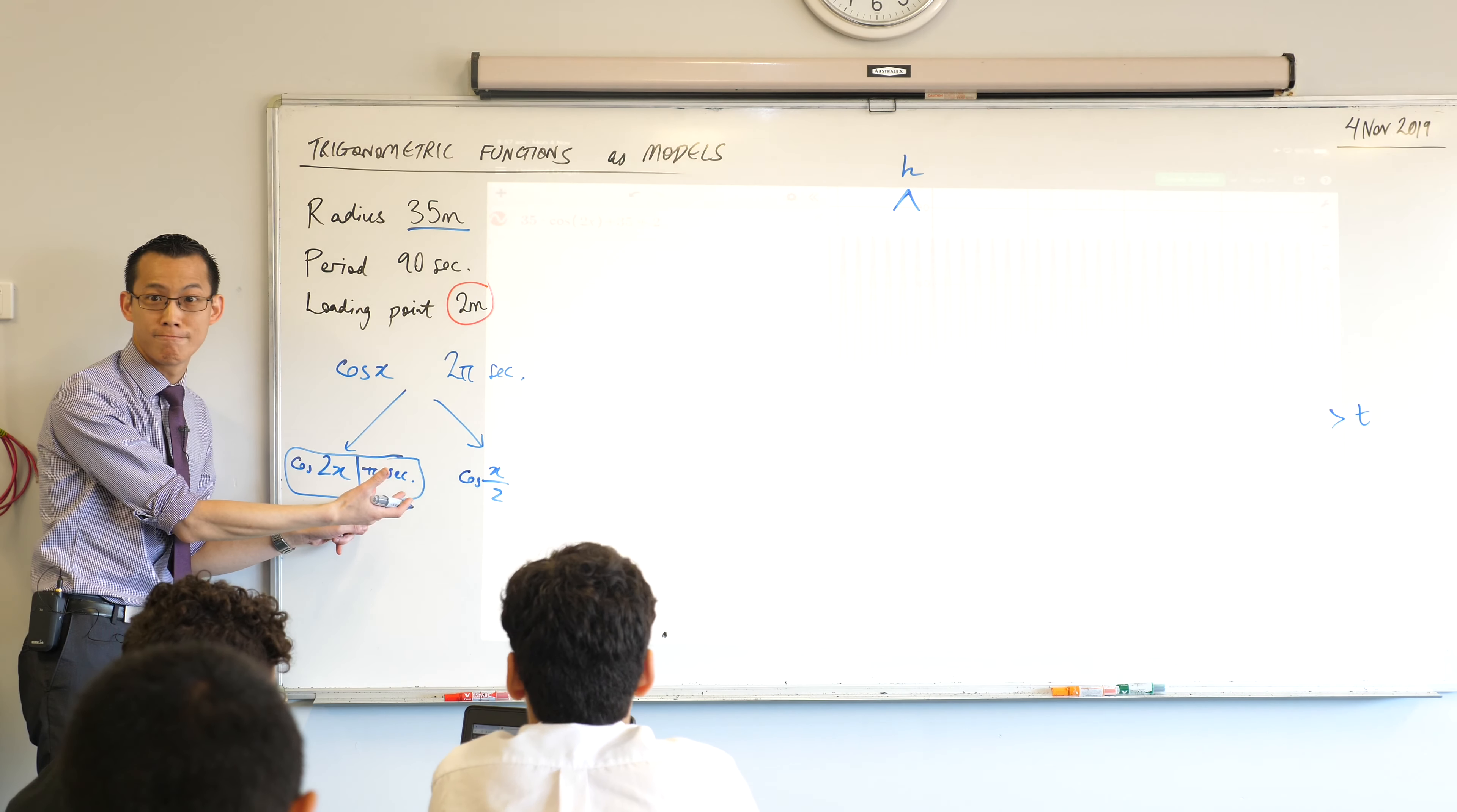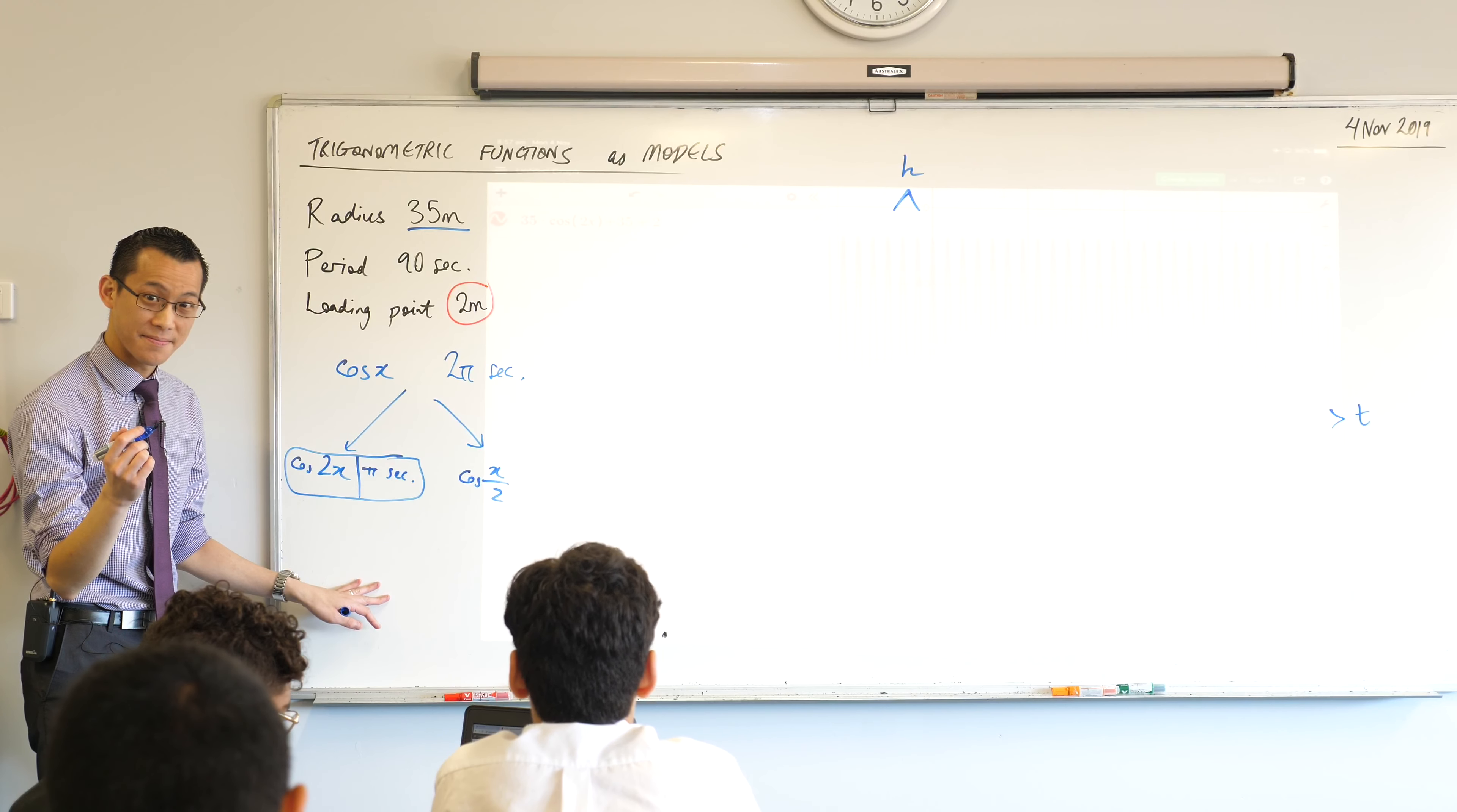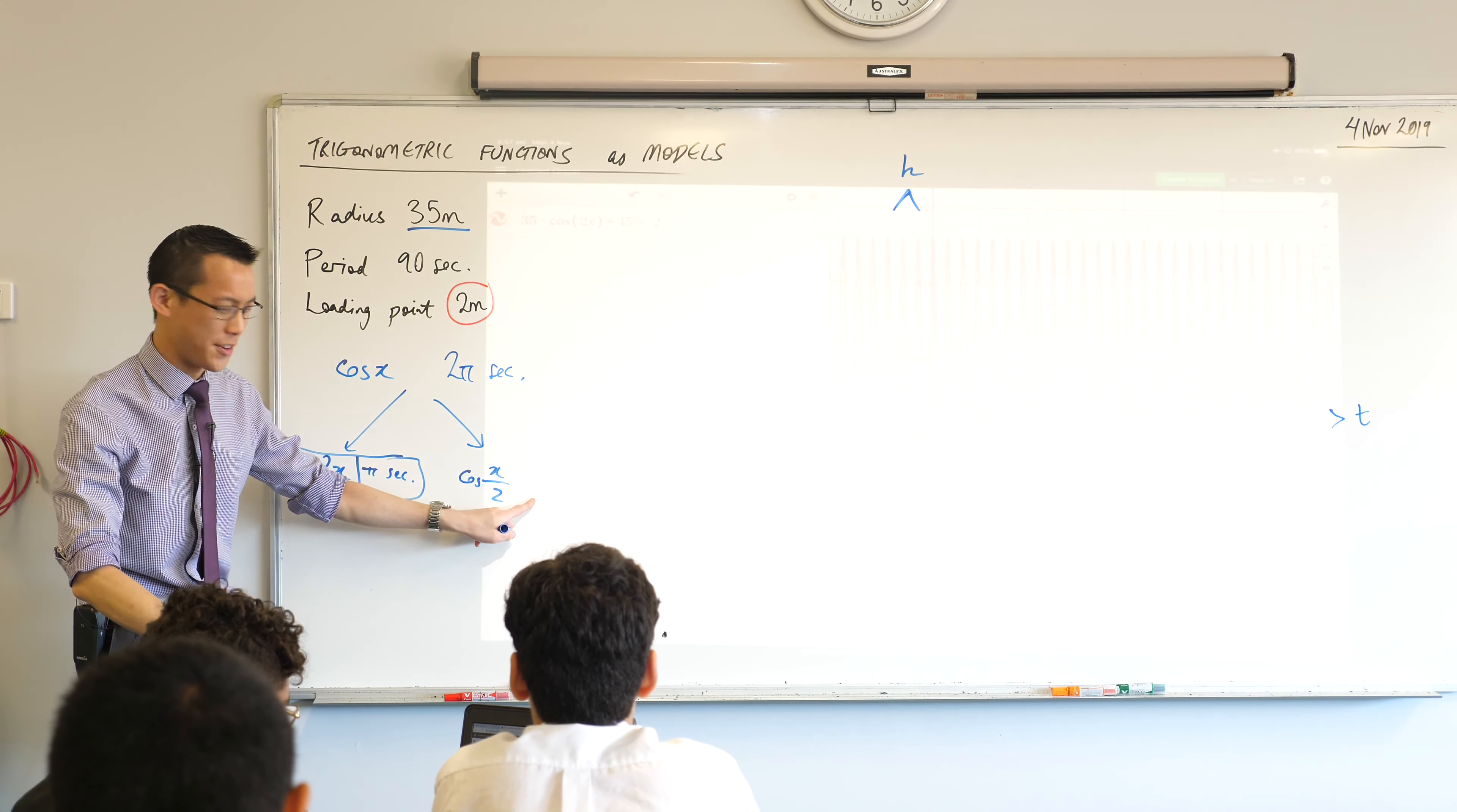So what would the time be for this? It would be 4. Or wouldn't you put cos over 45 since the period is already 2? Ah. Okay, alright. So you're a couple of steps ahead, Will. We'll come to your point in a second.